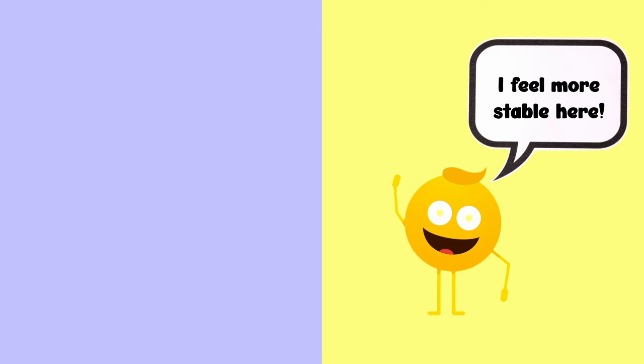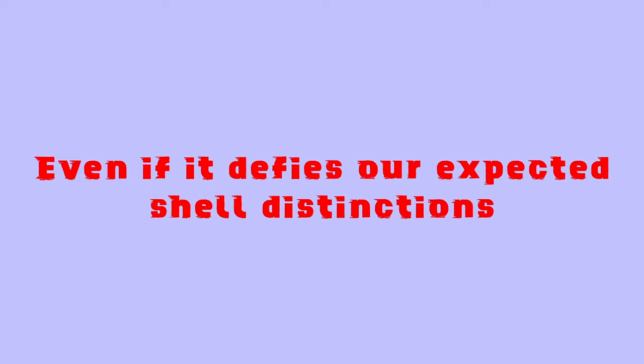Basically, an electron would happily leap to an adjacent shell of relatively equivalent energy in order to attain a more stable configuration, even if this defies our expected shell distinctions.